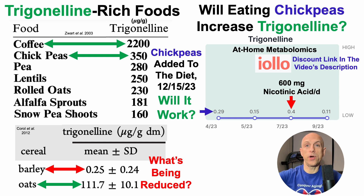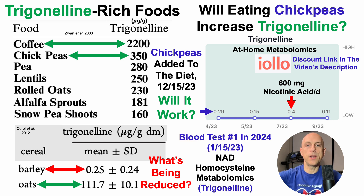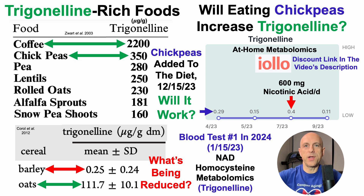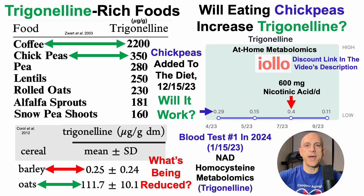Third, the question is: will it work? For the next blood test on January 15th, 2023, in addition to the standard chem panel and CBC, I'll also send blood for NAD, homocysteine, and metabolomics including trigonelline. For melatonin, I can't draw blood in the middle of the night, and a saliva sample may impair sleep quality. So I'll have subjective measures of sleep quality and objective data on sleep duration from my fitness tracker. Stay tuned for all that data in a future video.